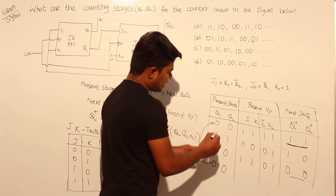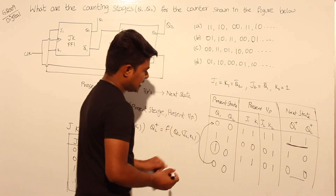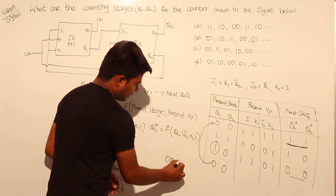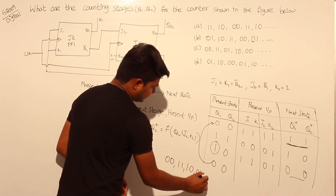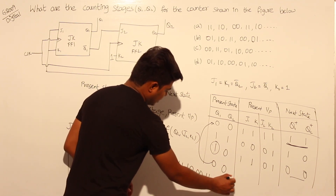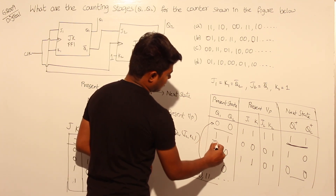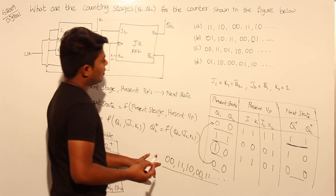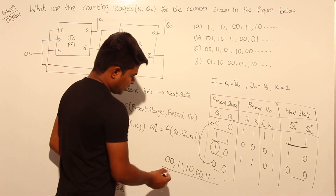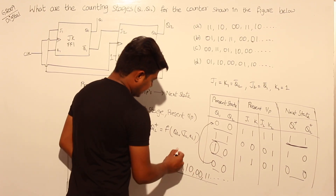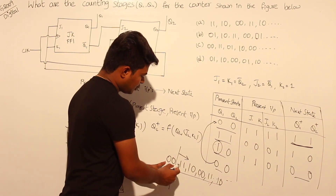We now have the values: 00, 11, 10, and back to 00 — it is a cyclic process that keeps repeating. The counting sequence is: 00 → 11 → 10 → 00 and so on. Looking at the options, the sequence shown is 11, 10, 00, 11, 10 — which matches starting from the second point in our sequence.